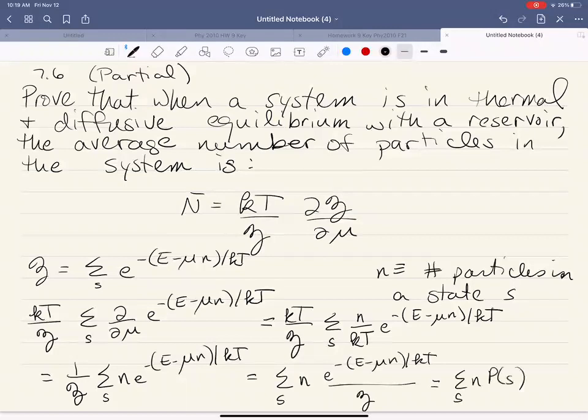So what we're doing is we're summing over the number of particles per state times the probability, and that is the definition of an average. So that gives us the average total number of particles once we finish our summation.